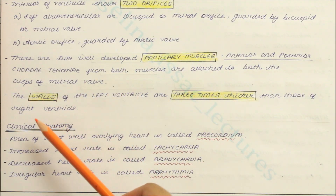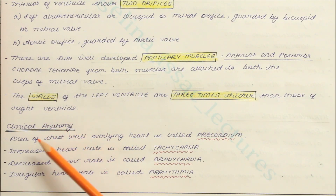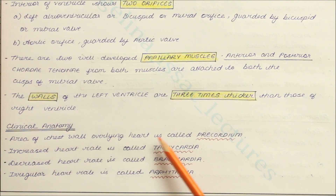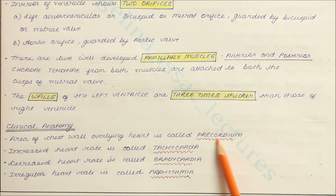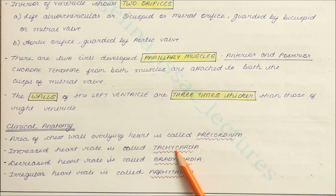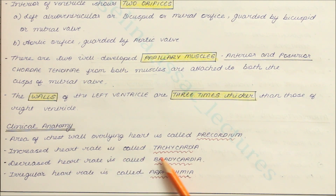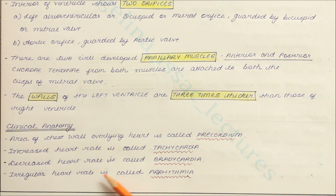Looking at the clinical anatomy: the area of the chest wall overlying the heart is called the precordium. Increased heart rate is called tachycardia, decreased heart rate is called bradycardia, and irregular heart rate is called arrhythmia.